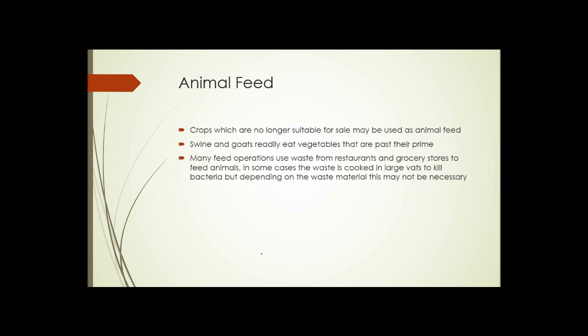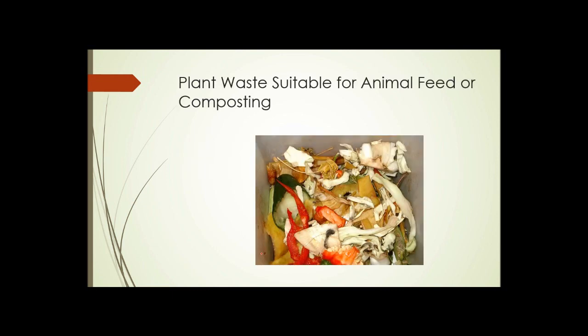One method of disposal is to use the waste products as animal feed. Some crops which are no longer suitable for sale — a little past their prime — may be suitable for use as animal feeds. Animals such as swine, goats, and even chickens will readily eat vegetables that are past their prime. Many feed operations use waste from restaurants and grocery stores to feed animals. In some cases, the waste is cooked in large vats to kill bacteria. We see some plant waste here — the result of about 15 minutes of operation of a commercial kitchen — which is suitable for animal feed and also for composting.